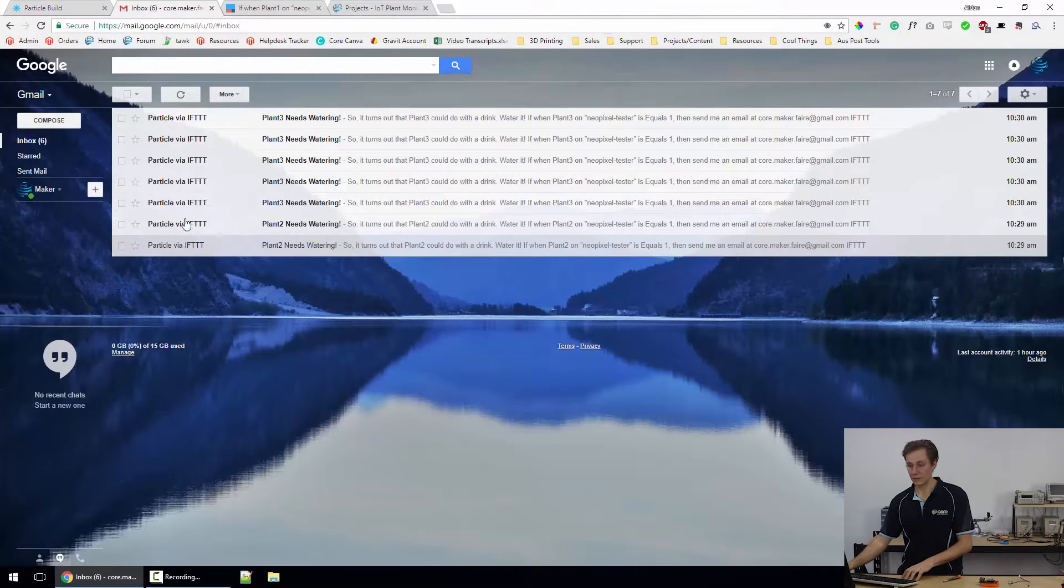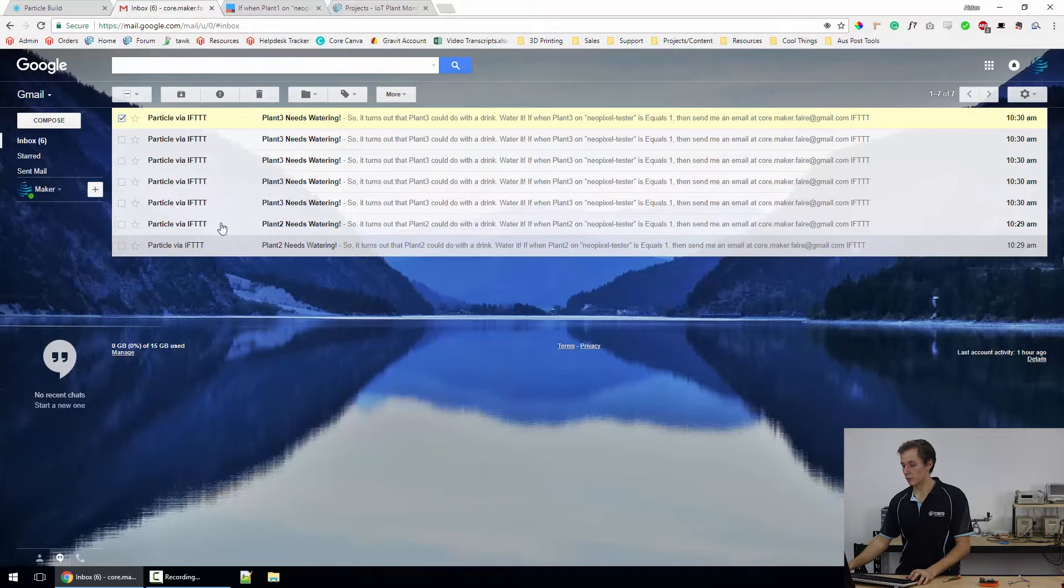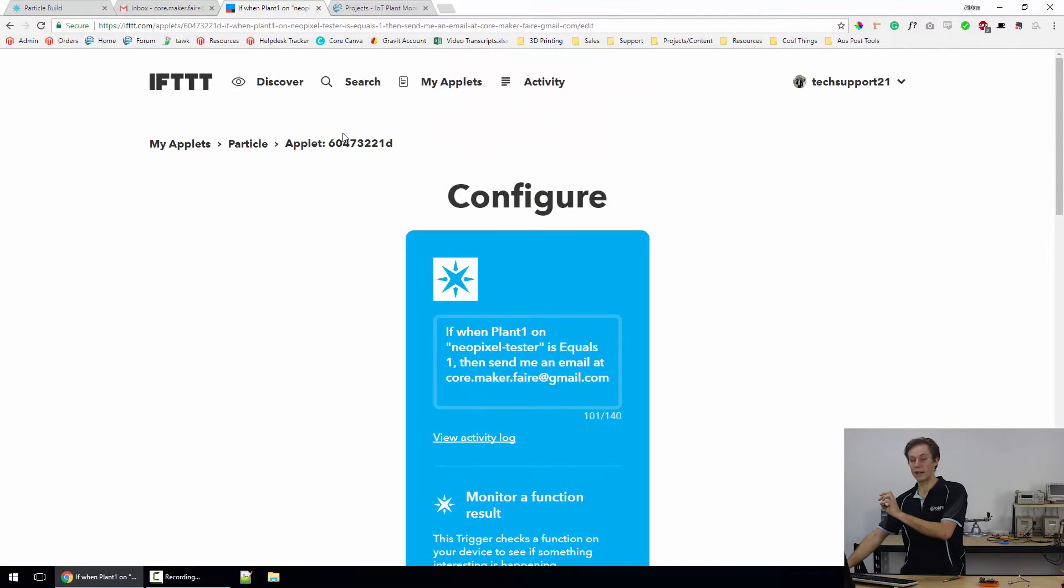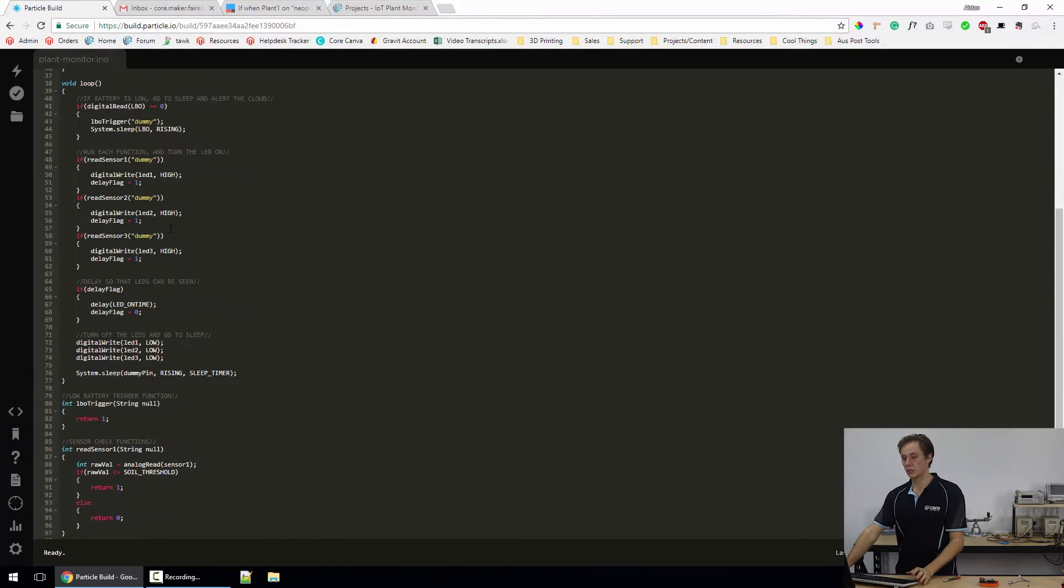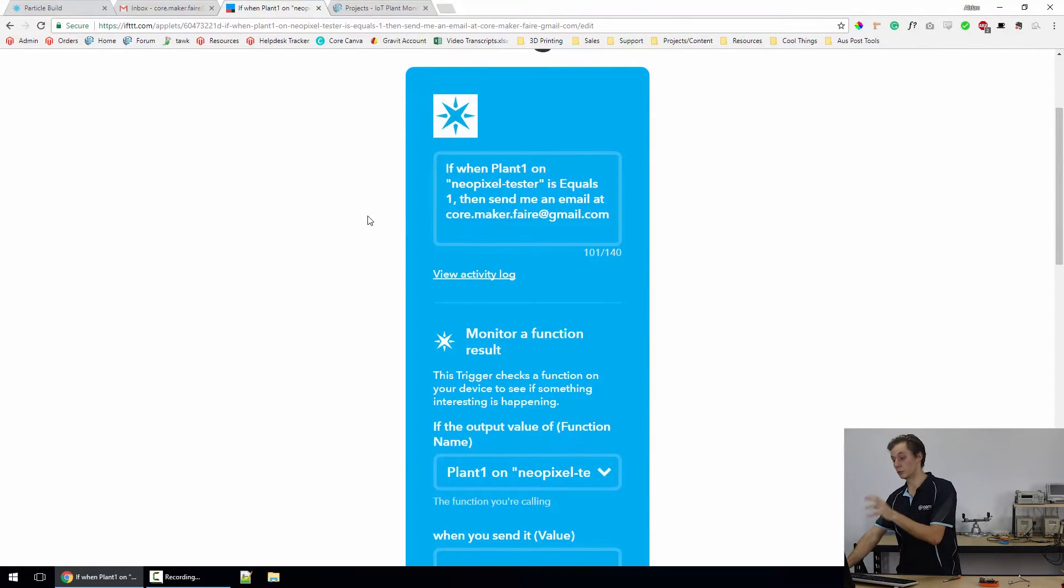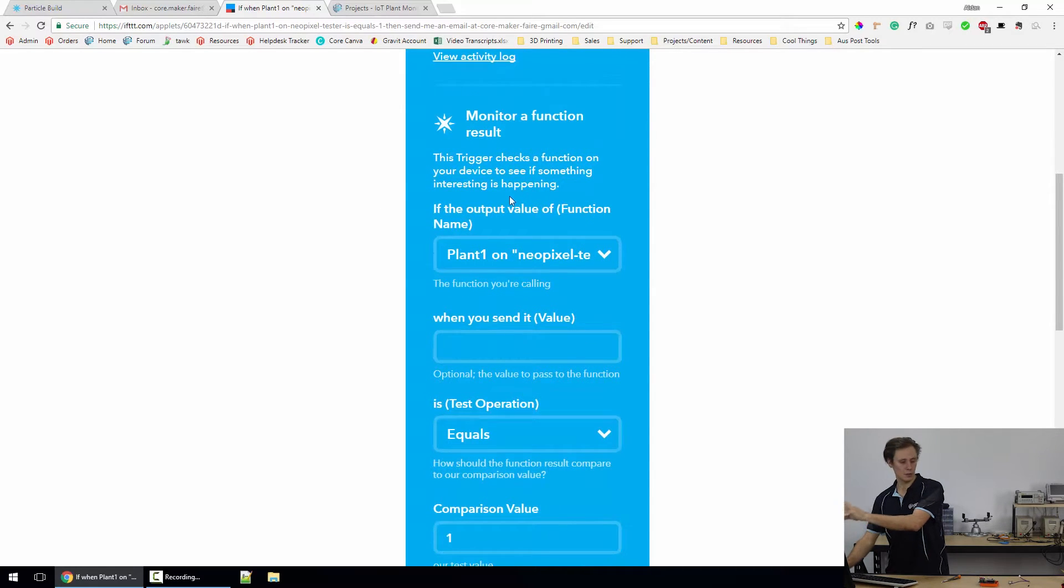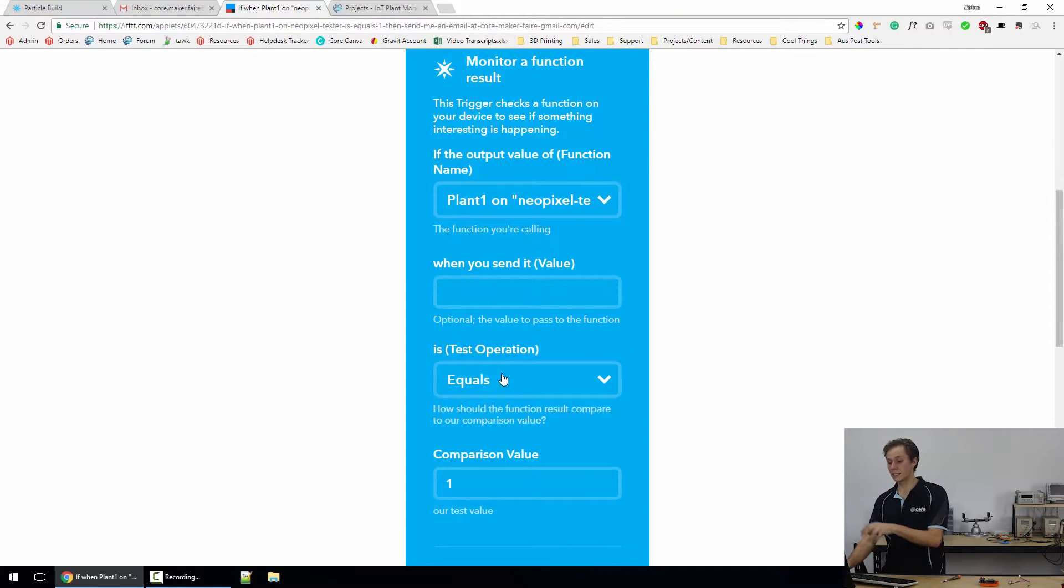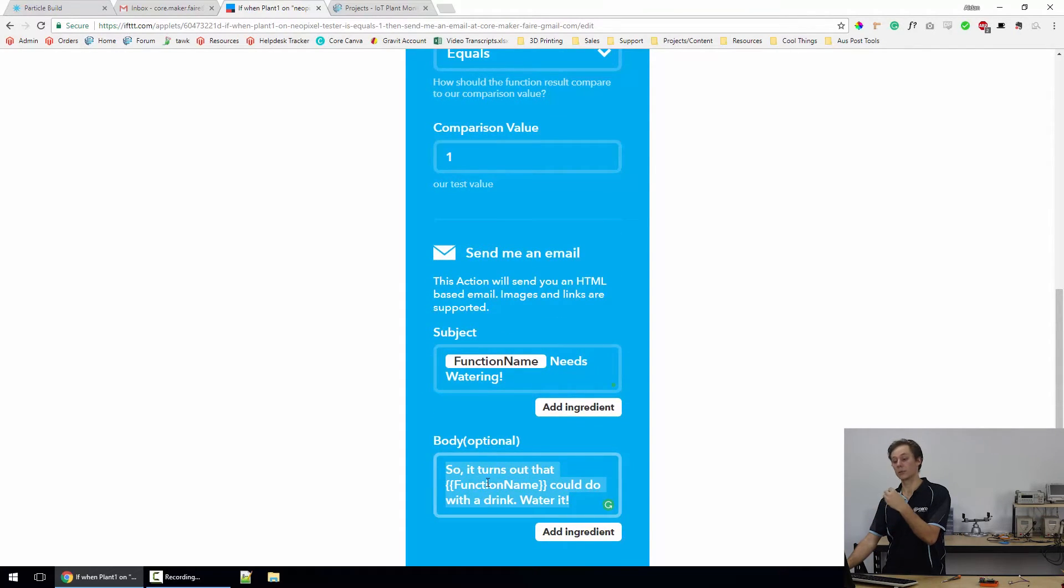You can see more of these emails coming through as we had it left on plant three plant two they're all thirsty. Just go ahead and clear those. And this is the IFTTT recipe so as I was talking about before when plant one which is the function name the cloud function that we've got it monitors that function when it's called it monitors the return result. I don't mind the name I was using this for a separate project neopixel tester it should be called IoT plant monitor.